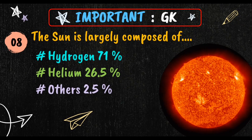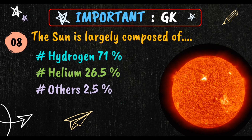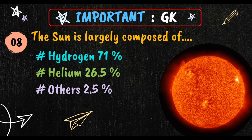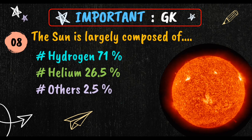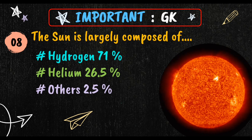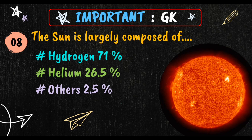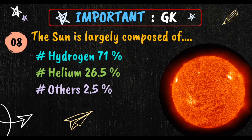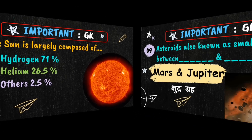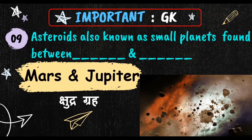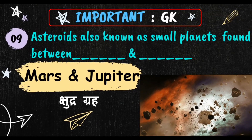Basically, the sun is largely composed of hydrogen 71%, helium 26.5%, and other gases 2.5%.